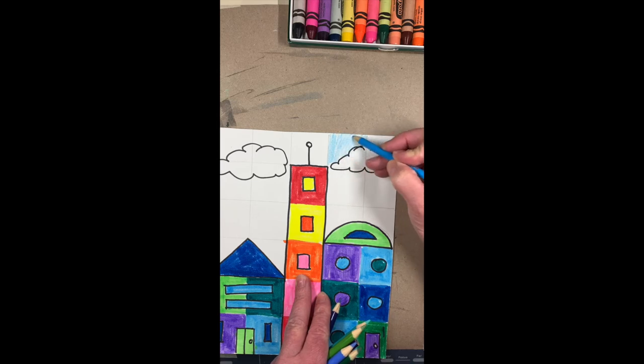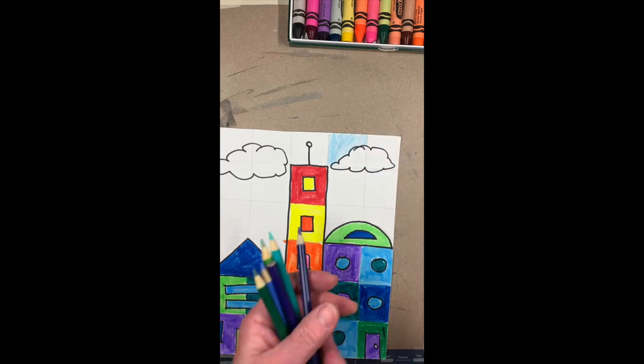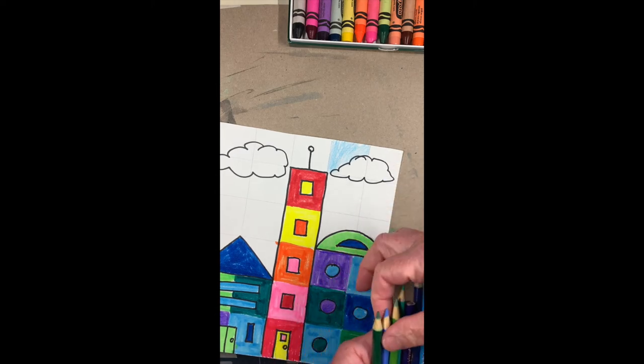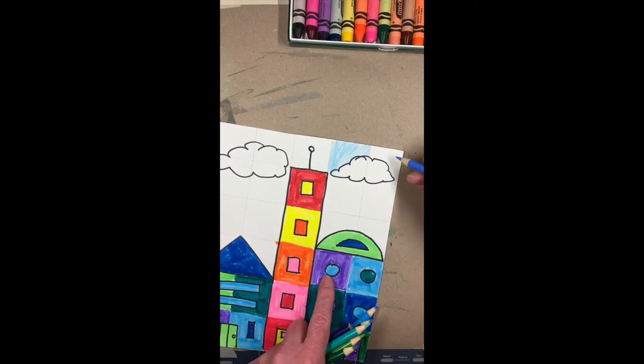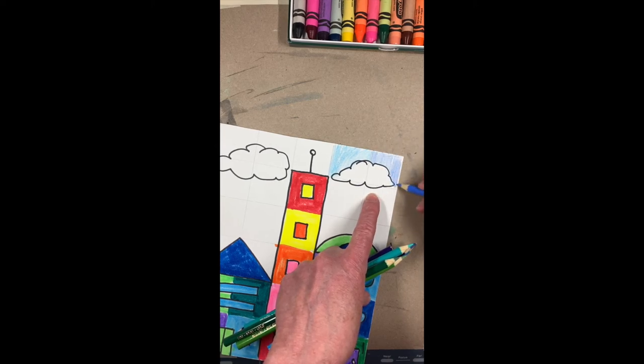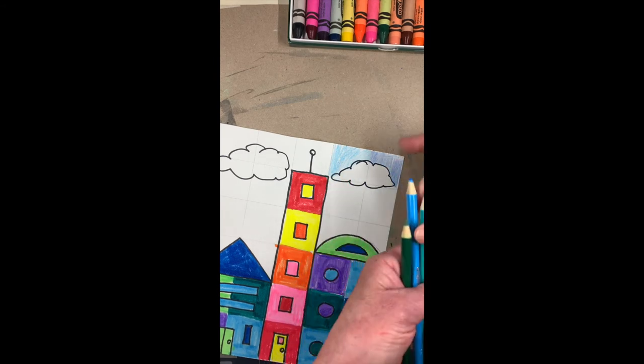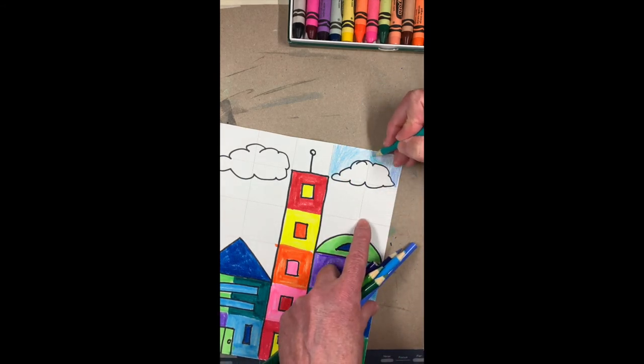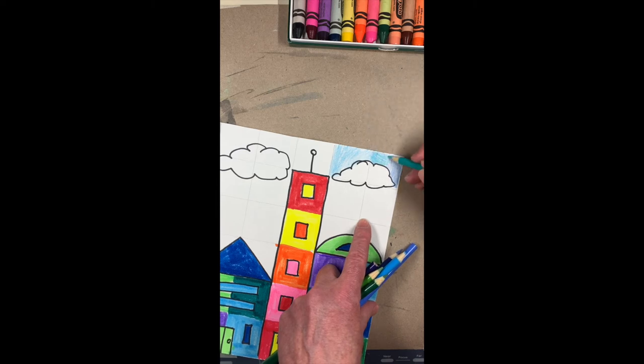And then maybe in the next square, take maybe if I have a slightly different blue I could take it. And I could also, same thing as with the watercolors, I could blend, take like a green and I could make this like a bluish green by blending the colored pencils together.